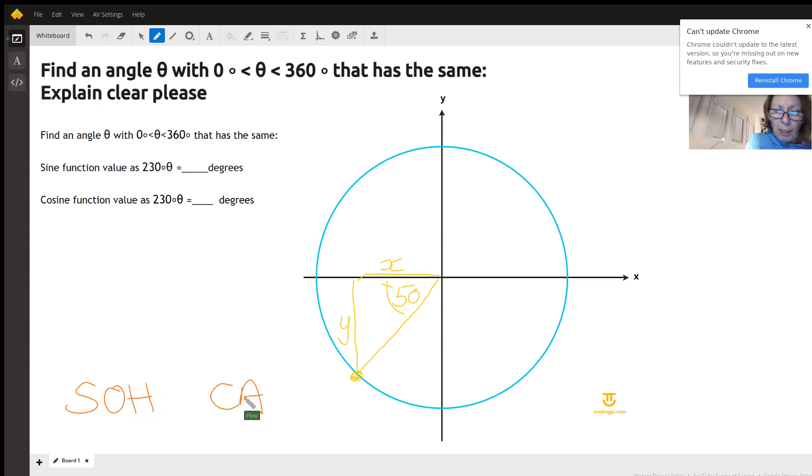So sine, we should maybe just jot down here SOH, and we will need cosine, so I'll put CAH here. Sine is opposite over hypotenuse. From my 50 degrees, opposite is the y coordinate, and my hypotenuse, remember unit circle, this hypotenuse is just one. So really my sine of 230 degrees is just going to be my y coordinate.